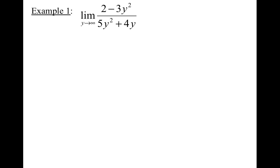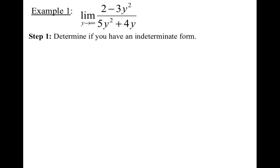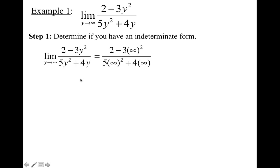Let's do an algebraic example. This is not an easy graph to look at. You could put this function into your graphing calculator and determine the asymptotes that way, but if you don't have a graphing calculator, how would you do it? Step one: determine if you have an indeterminate form. Take your limit, plug in infinity — 5 times infinity gives infinity, 4 times infinity gives infinity, so you end up with infinity over infinity, which is an indeterminate form. That should raise a red flag for magical algebra!